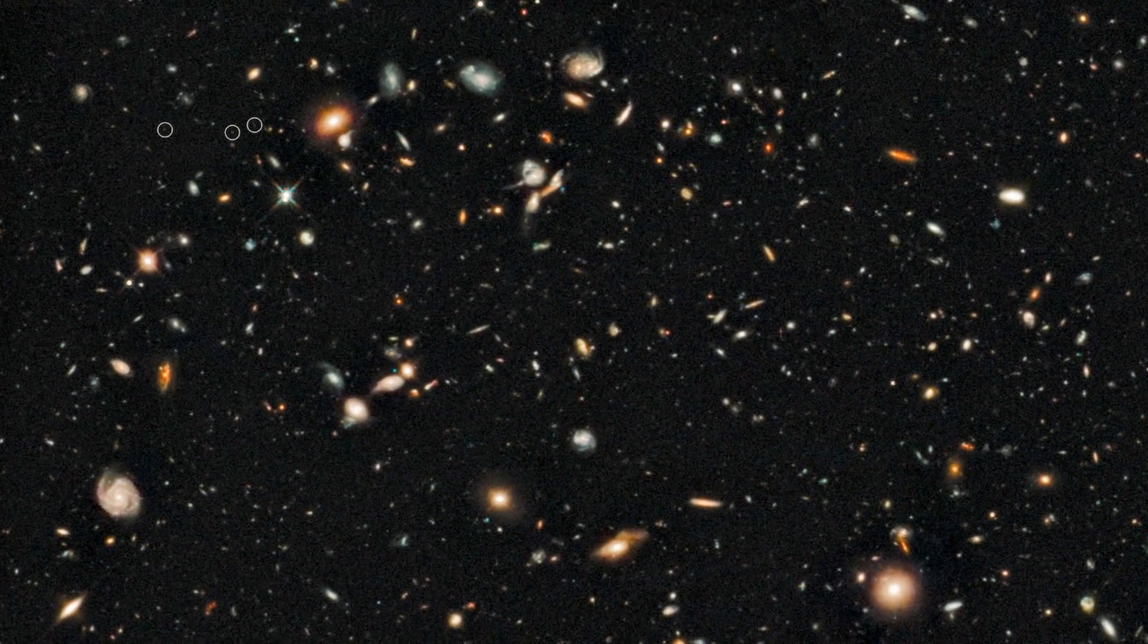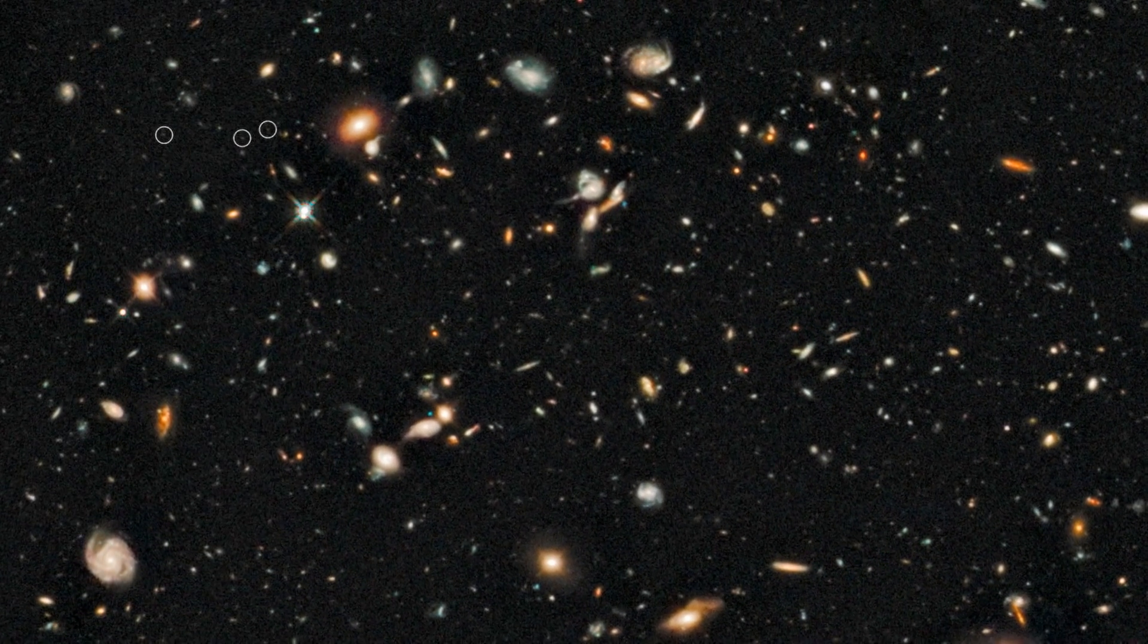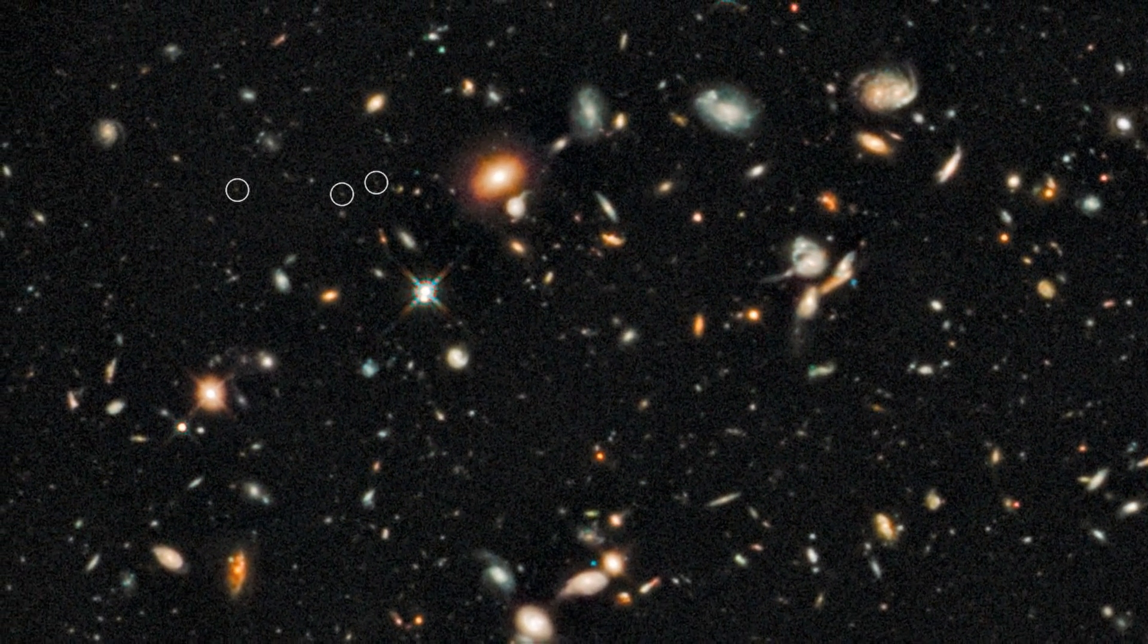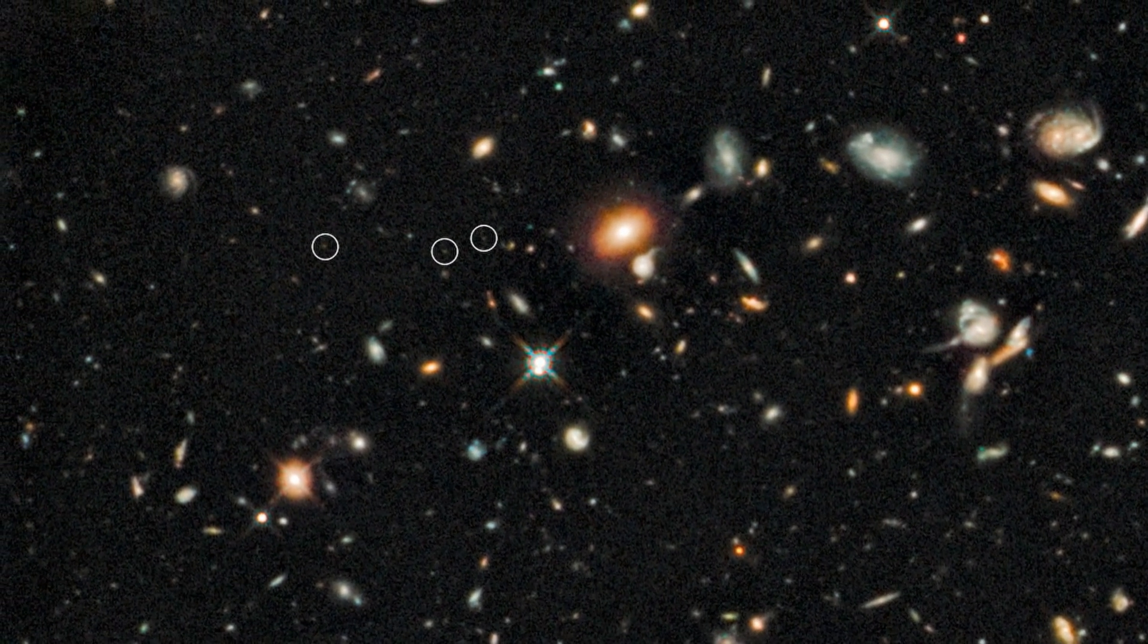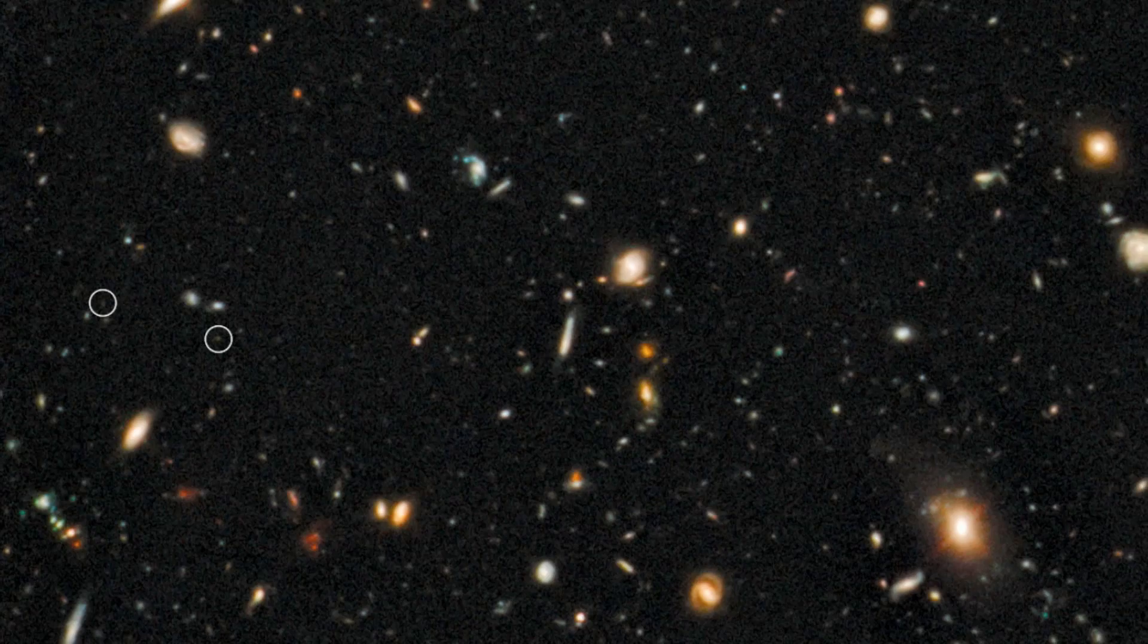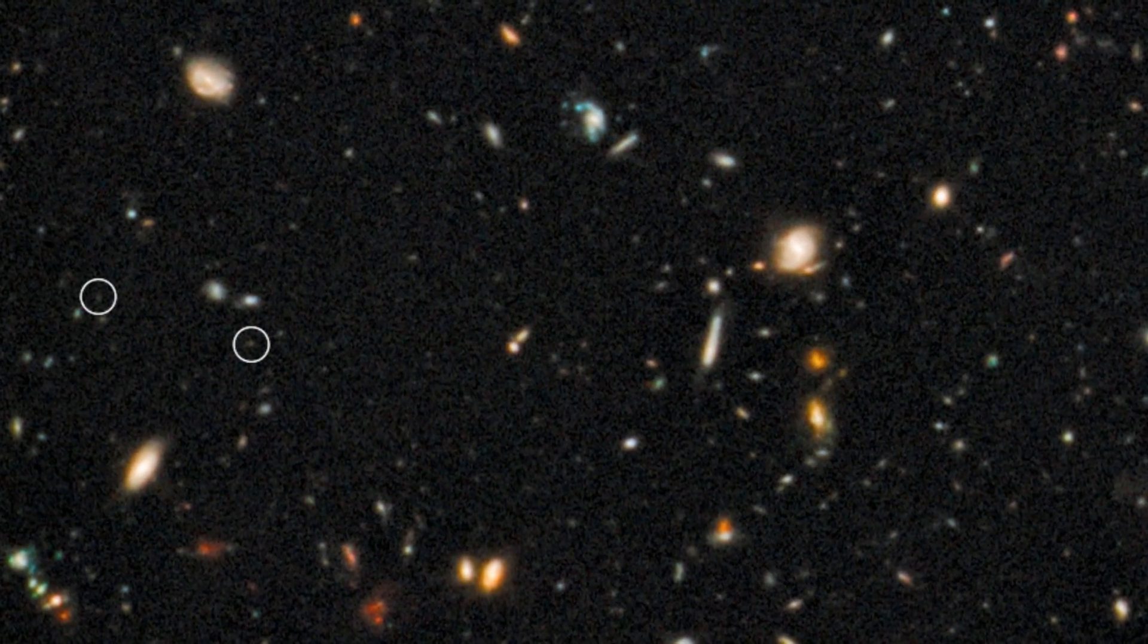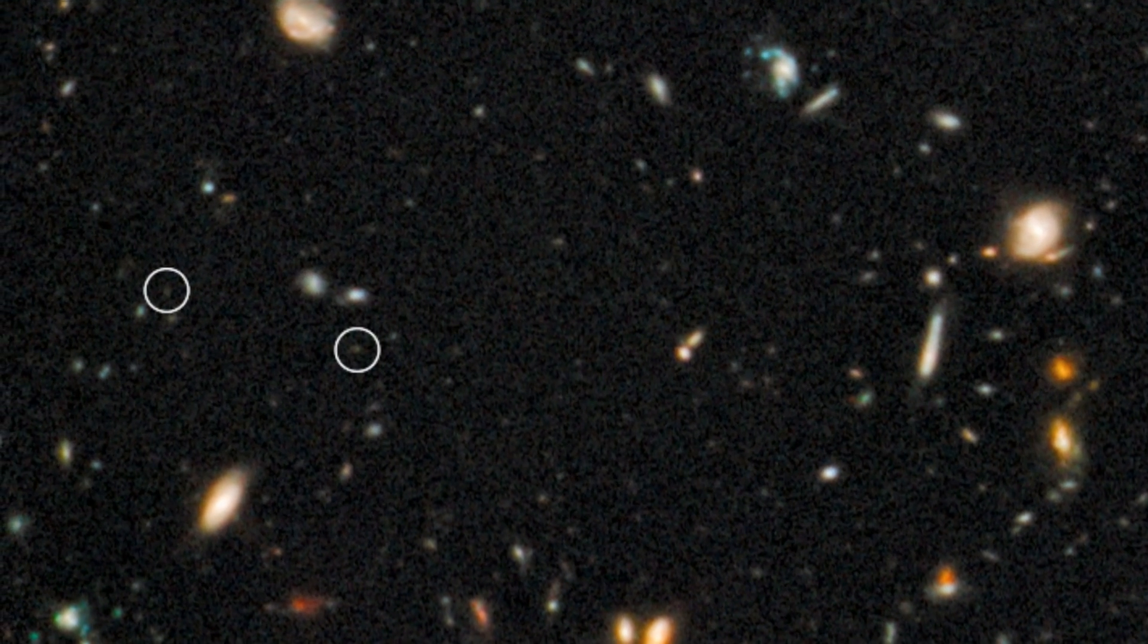Despite the difficulties of finding these early galaxies, the new Widefield Camera 3 on the NASA-ESA Hubble Space Telescope discovered several very good candidate objects earlier in 2010. They were thought to be galaxies shining in the early universe at redshifts greater than eight. But confirming the distances to such faint and remote objects is an enormous challenge, and can only reliably be done using spectroscopy from very large ground-based telescopes.